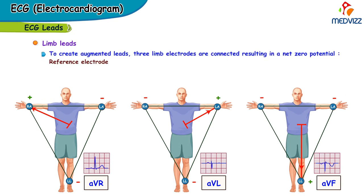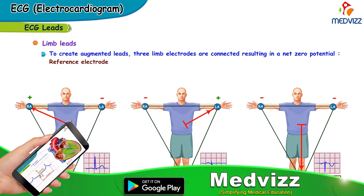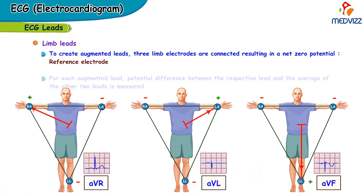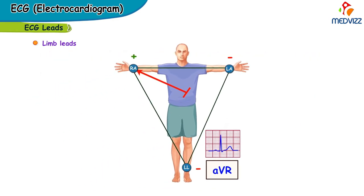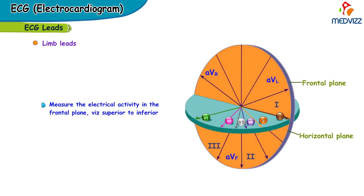To create augmented leads, the three limb electrodes are connected, resulting in a net zero potential called the reference electrode. For each augmented lead, the potential difference between the respective lead and the average of the other two leads is measured. For instance, aVR measures the potential difference between the right arm and the average of the left arm and left foot. The limb leads measure the electrical activity in the frontal plane, from superior to inferior and right to left.